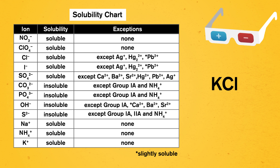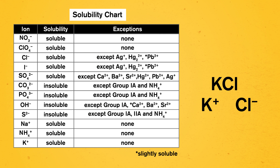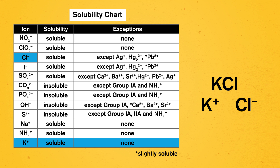With these on, we can see the ions that make up our substances — in this case, a potassium cation and a chloride anion. If we look on the solubility chart for the potassium ion, we can tell it's soluble, and so is the chloride ion. Neither of these ions fall into an exception category either, so we'll conclude that the overall compound, potassium chloride, is soluble.